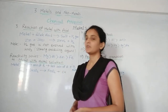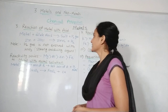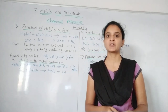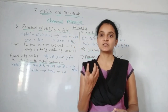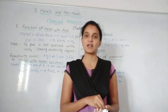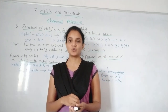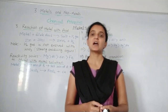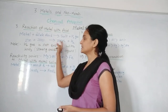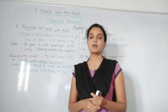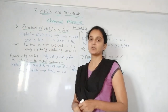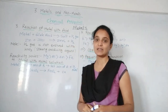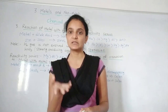Whenever a metal reacts with dilute acid, it will produce salt plus hydrogen gas. We took this example in our first chapter video also — zinc pieces placed in a flask, and when we add dilute hydrochloric acid, it produces zinc chloride plus hydrogen gas. So zinc reacting with HCl produces zinc chloride and hydrogen gas bubbles, which you can see with your eyes when performing this reaction.